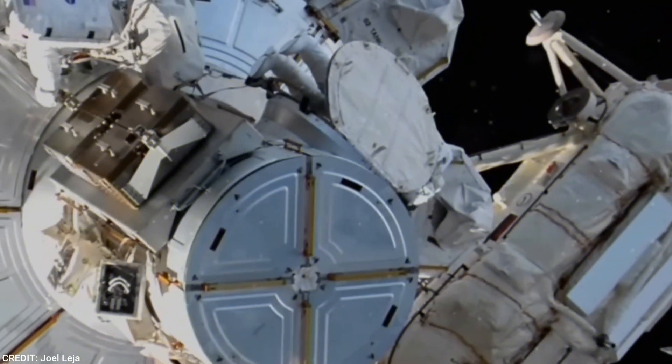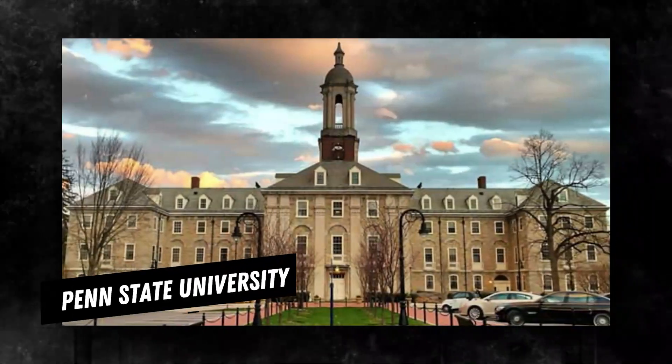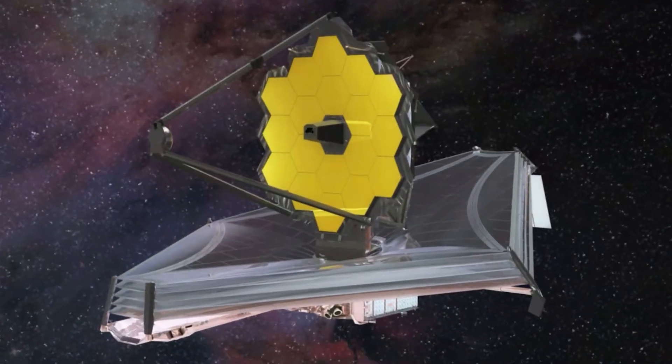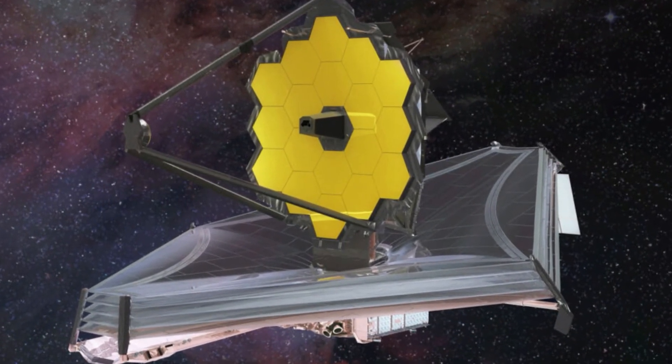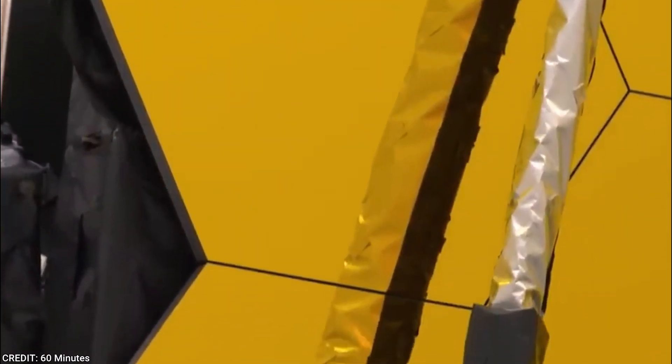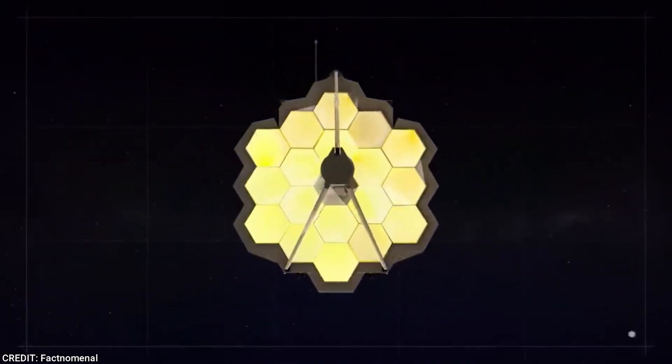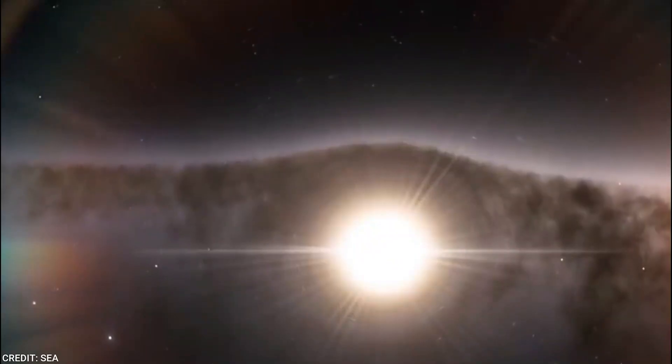A team of researchers led by Joel Leia, an assistant professor of astronomy and astrophysics at Penn State University, has made an exciting discovery using NASA's James Webb Space Telescope. The team was analyzing the first dataset provided by the telescope, which is equipped with infrared sensors that can detect light from the farthest reaches of the universe.